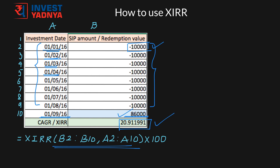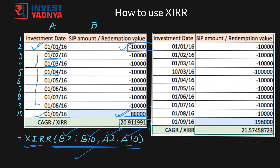In the XIRR formula, B2 is the first cell of your investment row, B10 is the redemption value, A2 is the first date of your investment, and A10 is the redemption date. This is how you can calculate the internal rate of return or CAGR on your SIP investments.